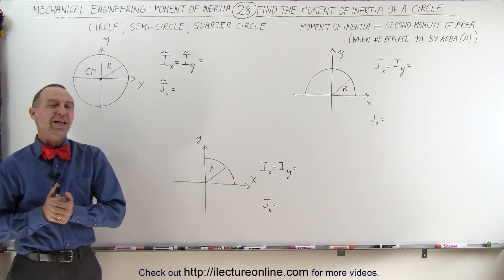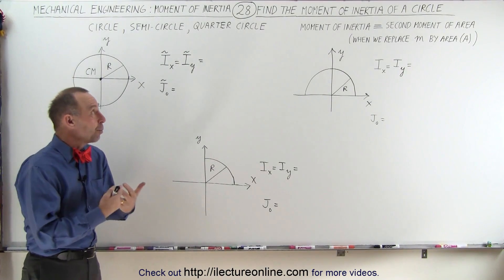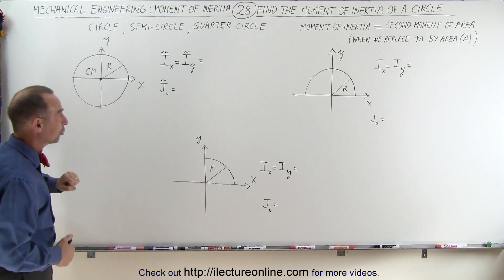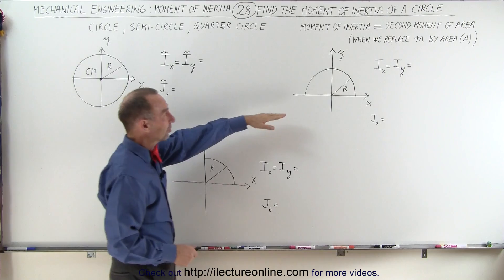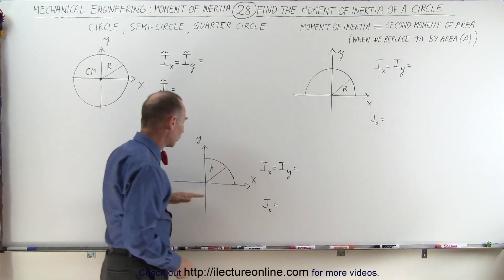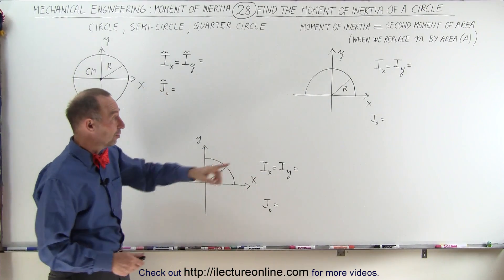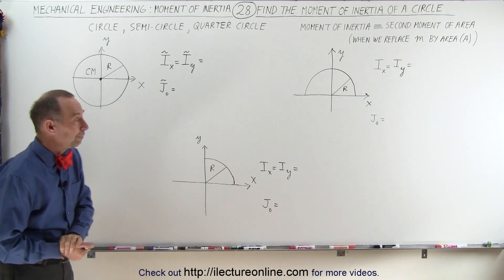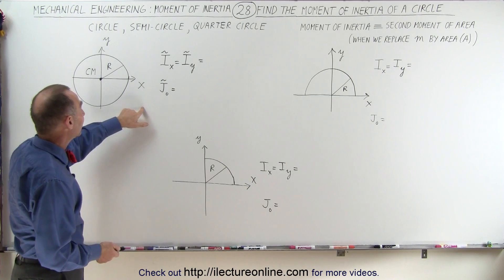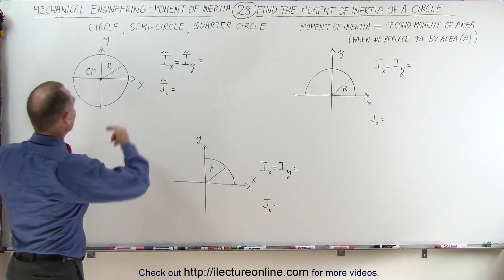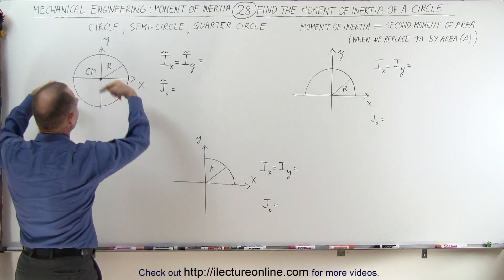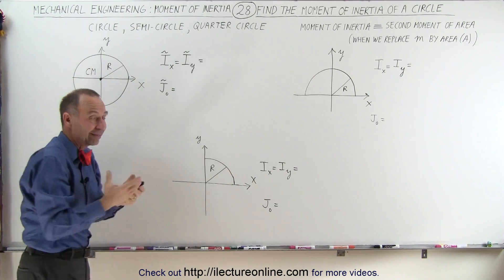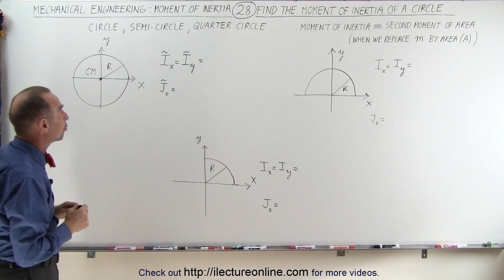Welcome to ElectronLine. Let's take a look at a circle and find the moment of inertia for a circle where we have the center mass at the origin. Here we're going to look at a semicircle and here we're going to look at a quarter circle. Because of complete symmetry, if we rotate the circle about the x-axis or the y-axis, we should get the exact same moment of inertia because we have the same area distribution.